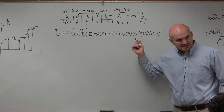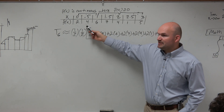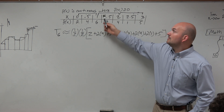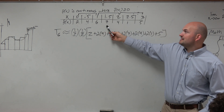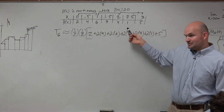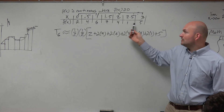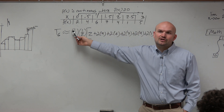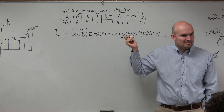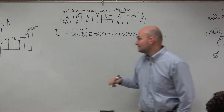And if this doesn't make sense to you, go ahead and rewrite it as base 1 plus base 2, base 1 plus base 2 — repeating for each trapezoid. You'll notice all these middle terms get added twice. That's why we're just multiplying by 2 — we're just saving ourselves some time.